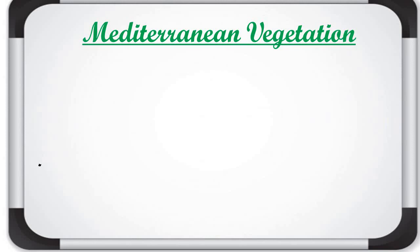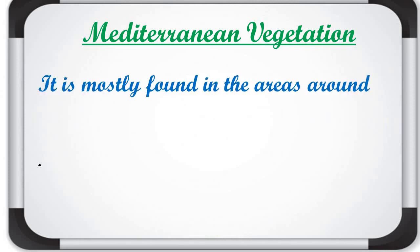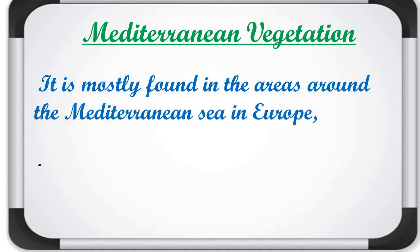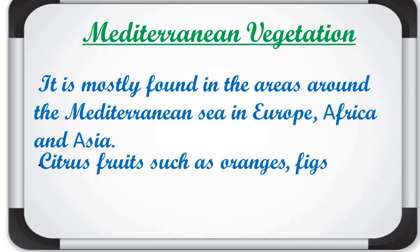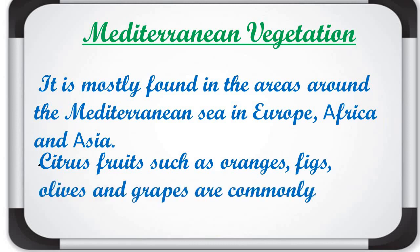Mediterranean vegetation is found along the Mediterranean Sea, mostly in areas around the Mediterranean Sea in Europe, Africa, and Asia. In this area, mainly citrus fruits are cultivated, which are sour in taste — like oranges, figs, olives, and grapes.